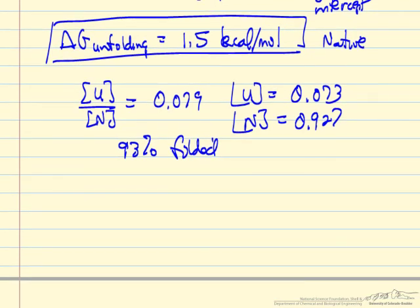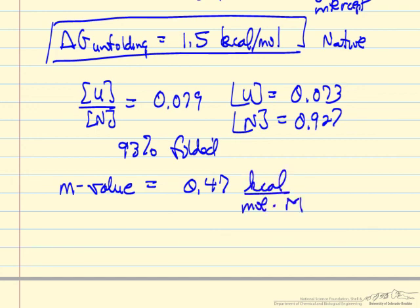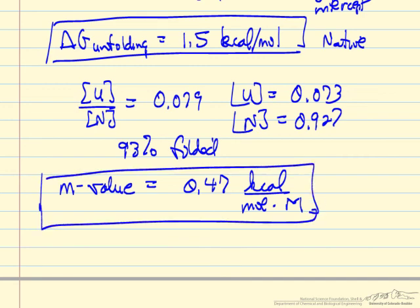And then the last asks for the absolute value of the slope, which is referred to as the m-value. So the m-value, the absolute value, again two significant figures, units kilocalories per mole per molar. So this is the m-value for this protein.